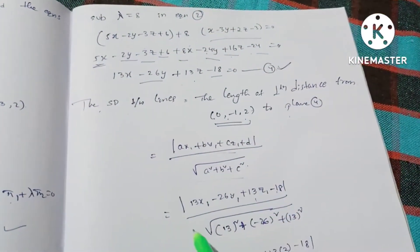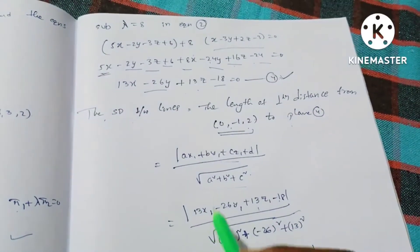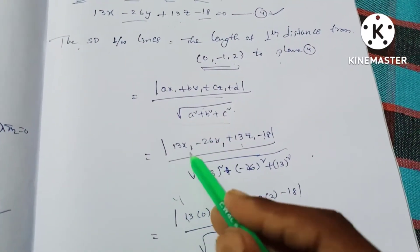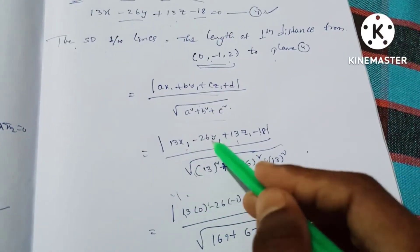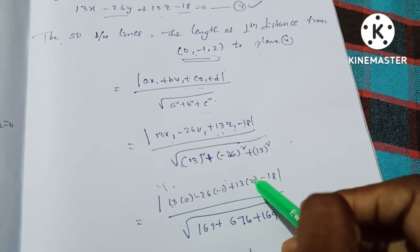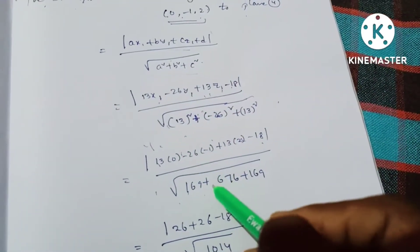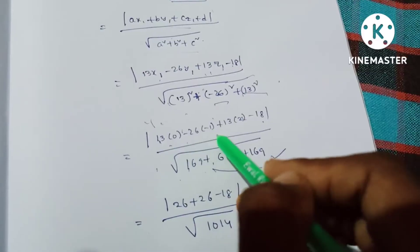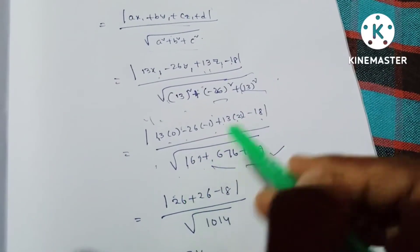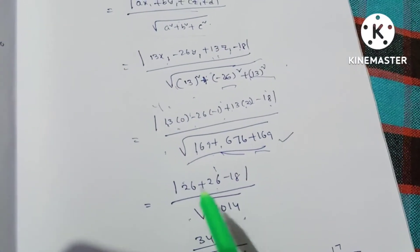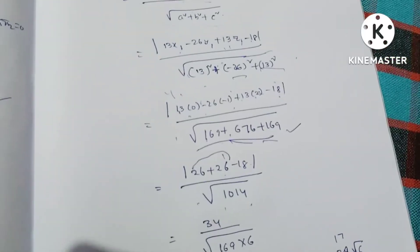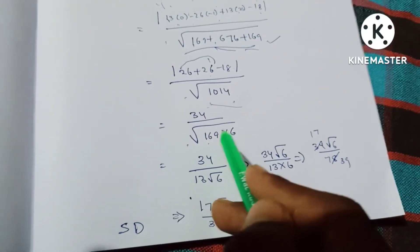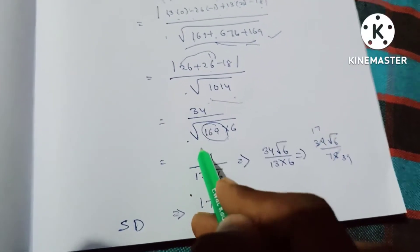The denominator is the square root of 13 squared plus (-26) squared plus 13 squared, which equals √(169 + 676 + 169) = √1014. Factoring: √(169 × 6) = 13√6. So the shortest distance is 34 divided by 13√6.